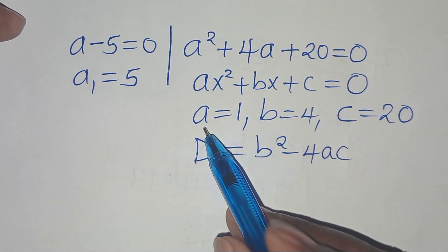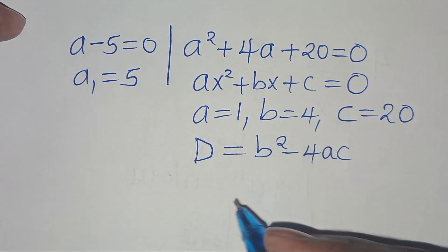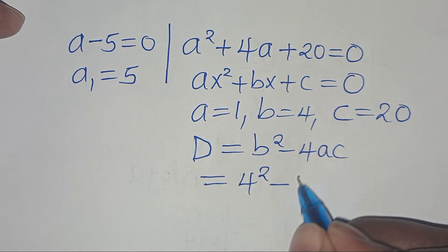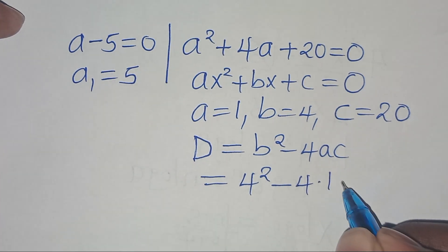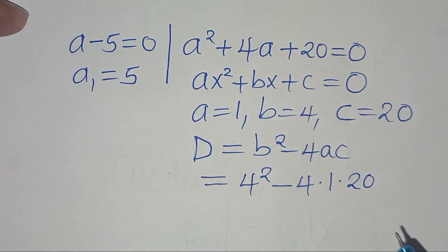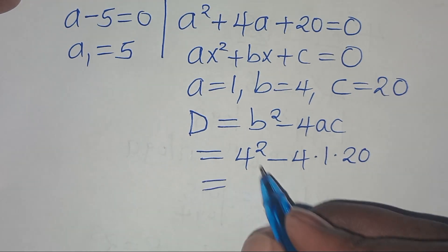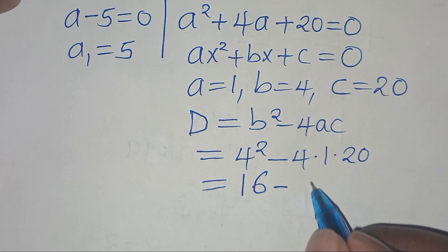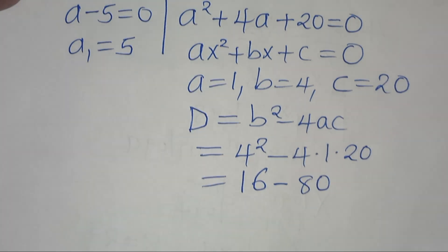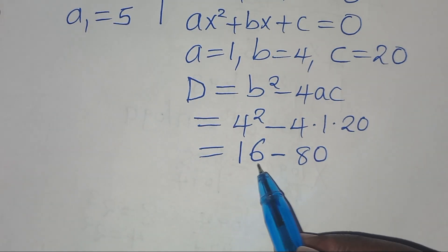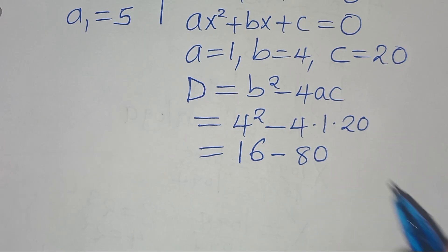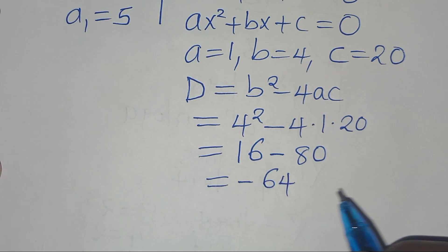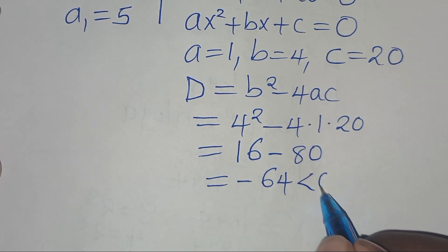Let's substitute the values of a, b, and c. Here we have 4 squared minus 4 times 1 times 20. Therefore, we have 4 squared, which is 16, minus 20 times 4, which is 80. So we have 16 minus 80, and this is equal to minus 64, and this is less than 0.